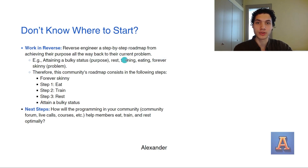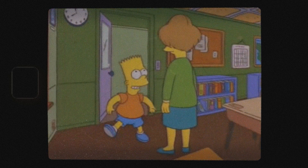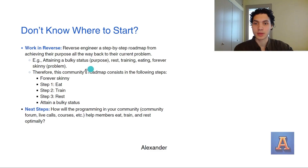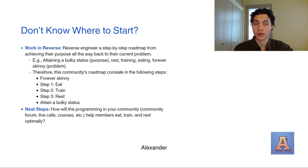So this is the basic reverse-engineered timeline for your community member. Then you flip it again, and this becomes your community's roadmap — the plan for your community member to follow in order to achieve their purpose and to overcome their current problem.